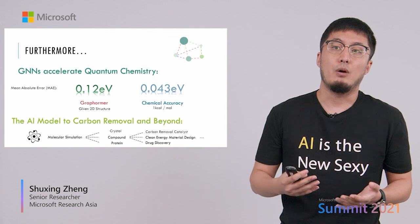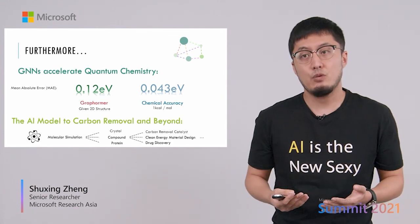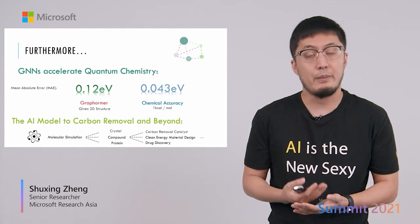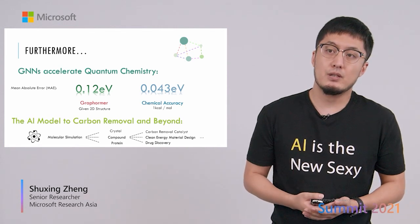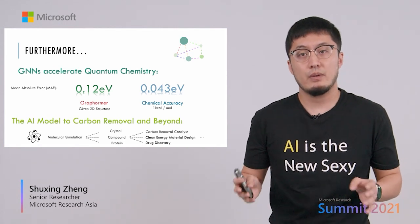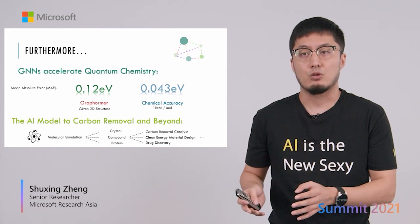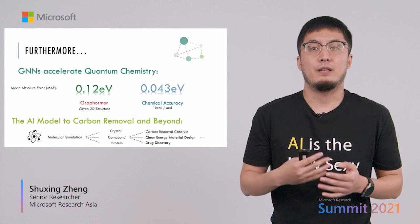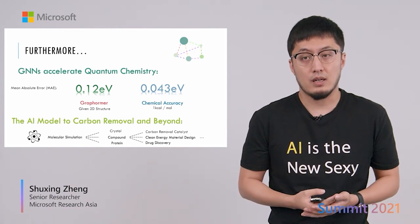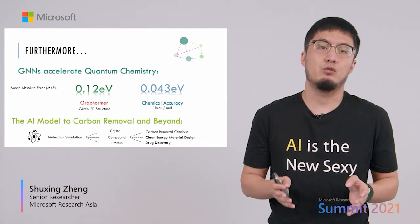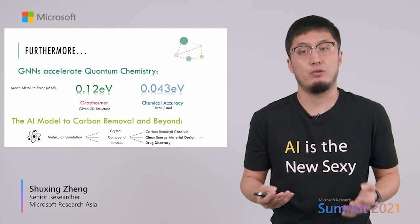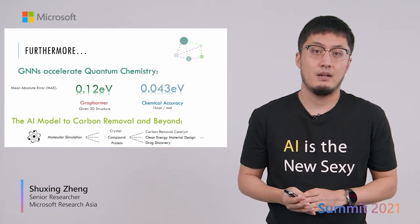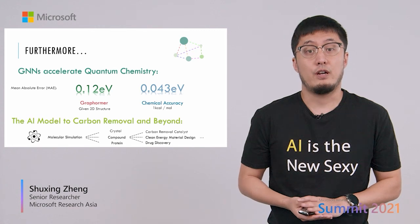Finally, I want to stress that there is still room to improve Graphformer toward chemical accuracy — the level where even lab chemical experiments cannot guarantee accuracy below this threshold. But we believe Graphformer has huge potential to be the AI model for carbon removal and many other important applications. Thanks very much for watching.